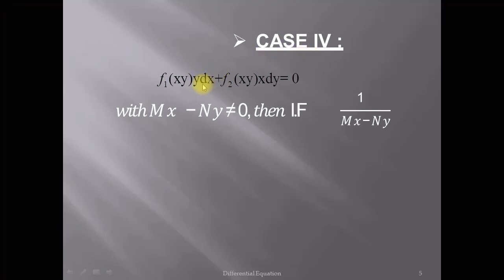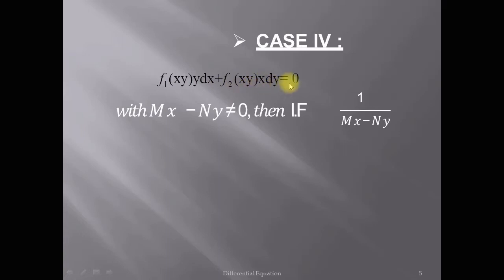Case 4: Suppose we have a differential equation in the form f₁(xy)·y dx + f₂(xy)·x dy = 0, with the condition that mx - ny ≠ 0. Then the integrating factor will be 1 over (mx - ny).